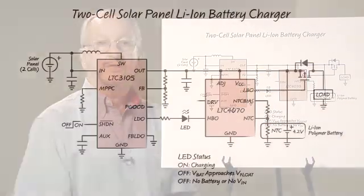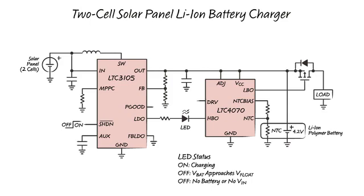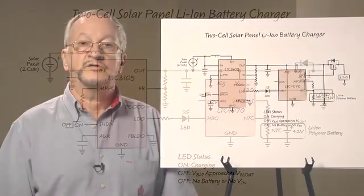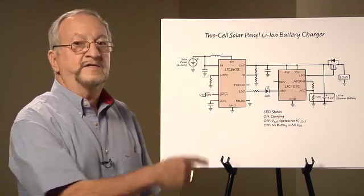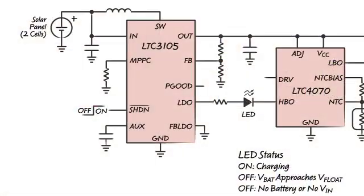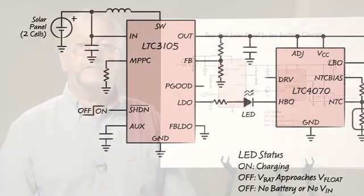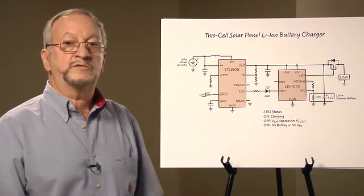The circuit shown here uses the LTC 3105 boost converter powered by a two-cell solar panel to charge a lithium-ion battery. Also included in the circuit is an LTC 4070 shunt battery charger to limit the float voltage on the battery and to indicate when the battery is fully charged. A 75K resistor sets the LTC 3105 maximum power point to approximately 750 millivolts. Maximum power point control is absolutely necessary when a solar panel supplies input power to a DC to DC converter as the following curves will show.